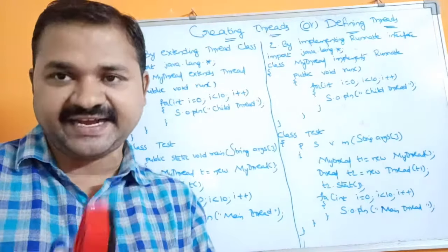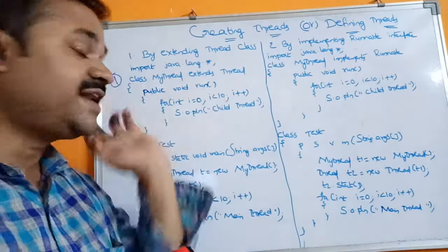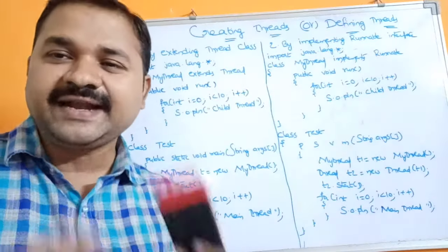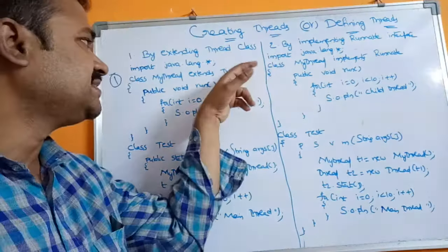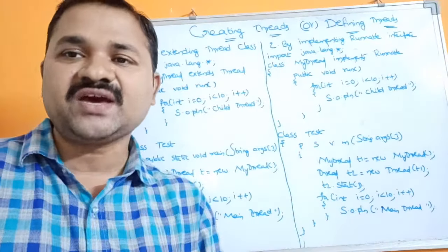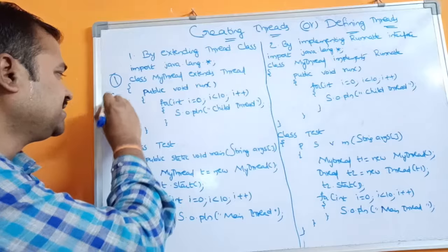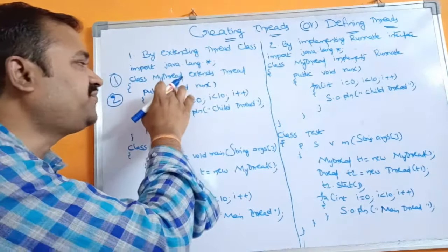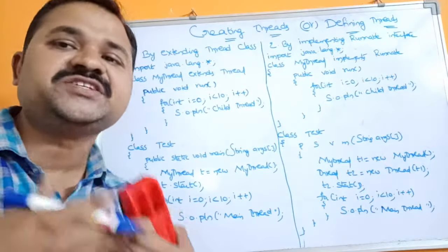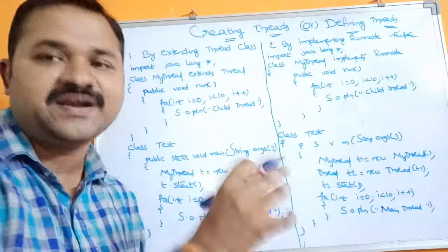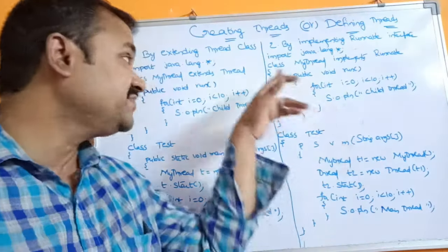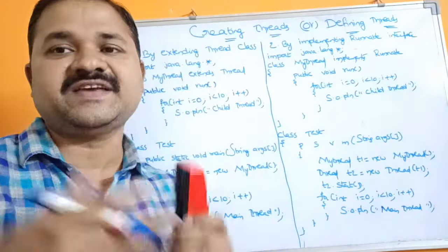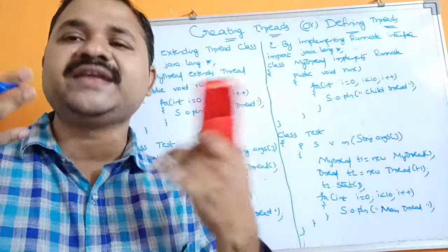To provide the thread's functionality, we override the run() method. The run() method is present in the Thread class, but since we are not satisfied with the parent class definition, we provide our own definition by overriding run(). This is the second step — provide the definition for the thread class by overriding run().